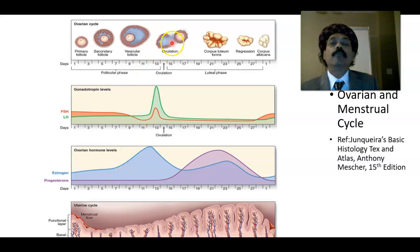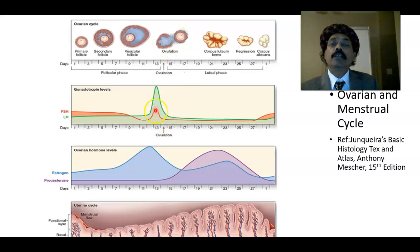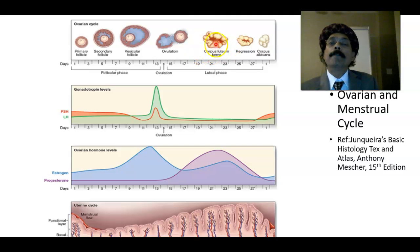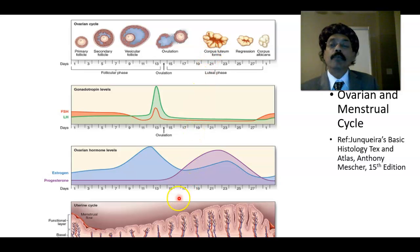Then there will be a luteinizing hormone surge from the anterior pituitary, causing expulsion of the ovum — that is ovulation. After ovulation, the remnant follicular cells — the granulosa cells and theca cells — become luteal cells. They accumulate fatty substance and produce progesterone.